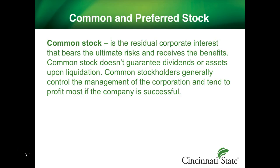Common stock is the most common type of stock a corporation can issue. It represents the residual corporate interest that bears the ultimate risks — investors may lose their entire investment if the company goes under. They can also receive benefits. Common shareholders generally control the management of the corporation through their voting rights and profit most if the company is successful.